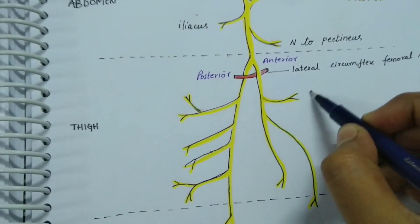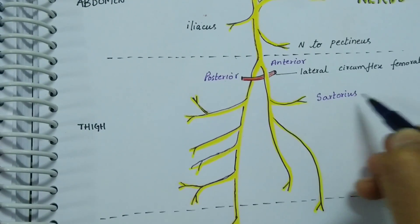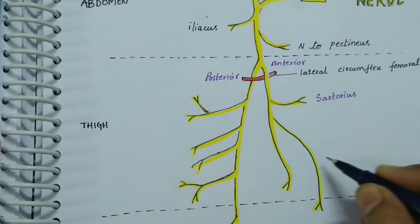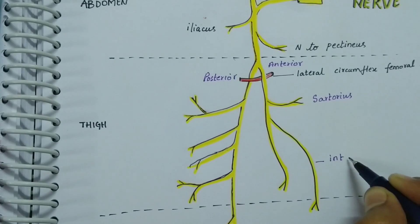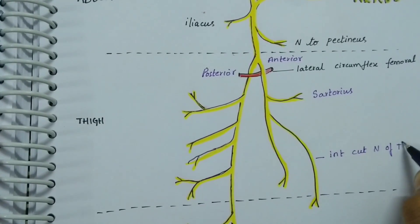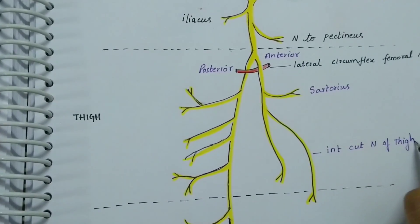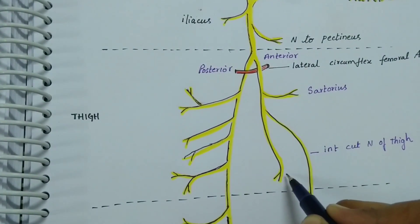The anterior division gives a branch to the sartorius, and this is the intermediate cutaneous nerve of thigh. This is the medial cutaneous nerve of thigh.